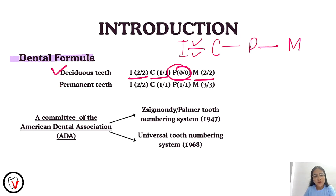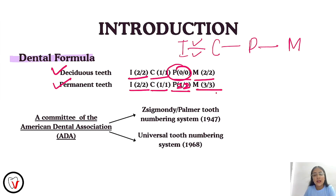The dental formula for the permanent teeth can be read as: incisors — 2 maxillary, 2 mandibular; canine — 1 maxillary, 1 mandibular; premolar — 2 maxillary, 2 mandibular; and molars — 3 maxillary and 3 mandibular.